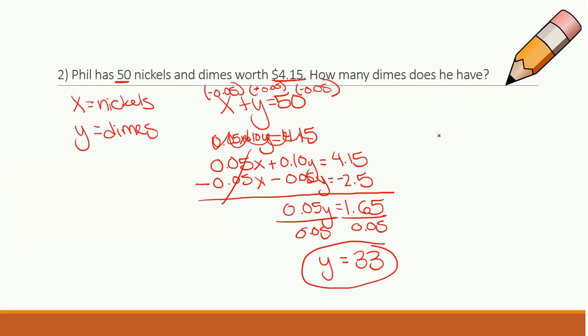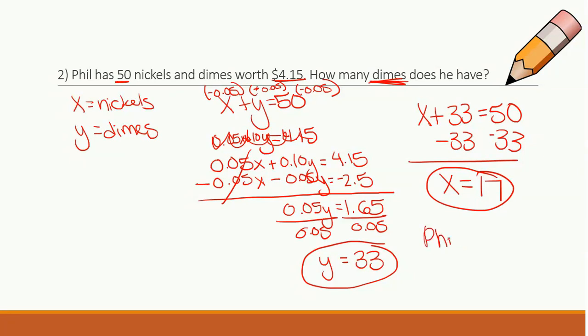Now I need to know my x's as well. So just in case the problem would say dimes and nickels, let's figure out our nickels. So I have x plus my y, which is 33, equals 50. Let's subtract 33. Some of you are probably doing this one in your head, but that's okay. I get 17. Now let's write our final answer. They want to know about dimes. So I will say Phil has 33 dimes. And then my answer is done.